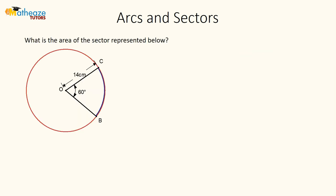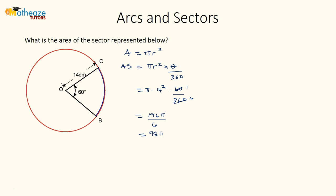Let's look at some examples. For these examples we'll display answers using both degrees and radians. Using degrees, the area of a sector is πr² × (θ/360). With r = 14 and θ = 60°, that's π × 196 × (60/360) = 196π/6, which simplifies to 98π/3 square centimeters.